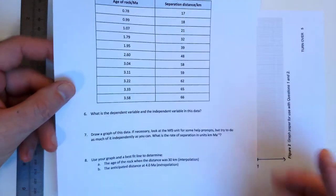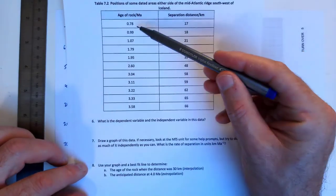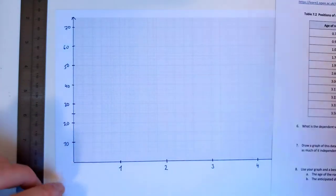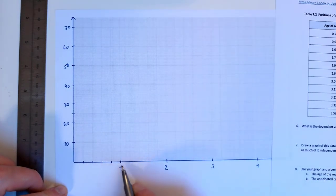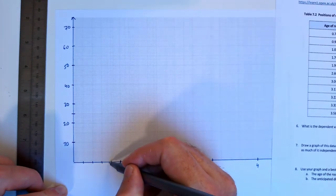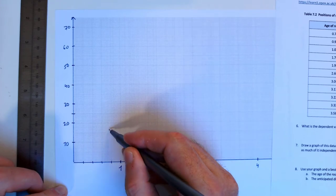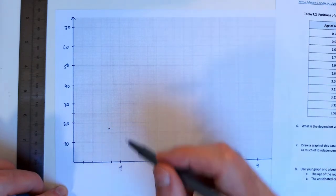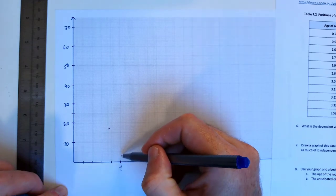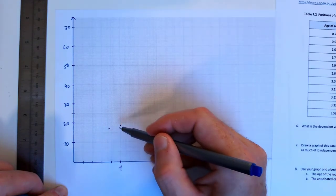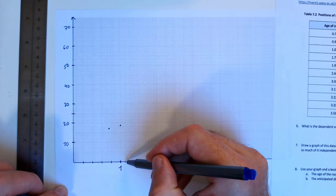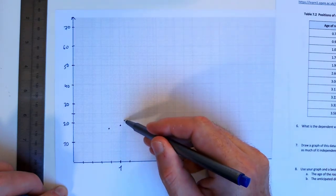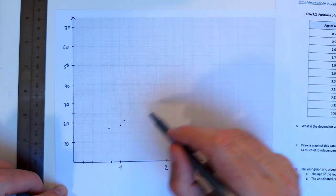All right, so let's put in a few points. I want first of all point 0.78 and 17. Here each of these minor points are going to be 0.2, 0.4, 0.6, 0.8, 1. So 0.78 is going to be about here and 17, 10, 15, 17 is going to be about there. 0.99 just short of 1, 18. 1.07, so that's 1, it's 1.2, that means that's 1.1, that's 1.07, 21, and so on. I'll continue making these points.